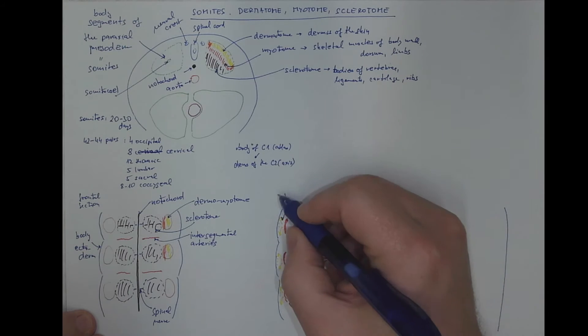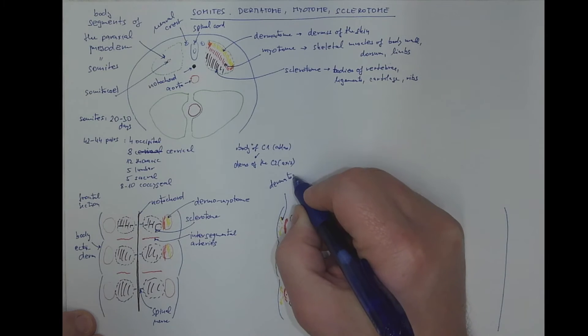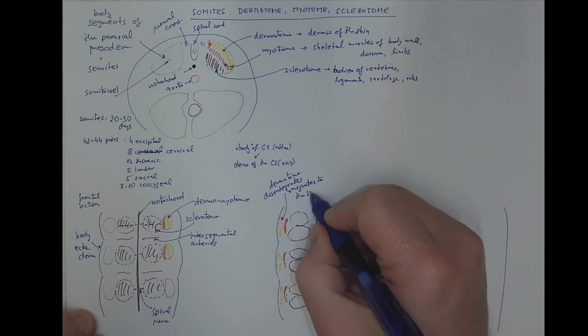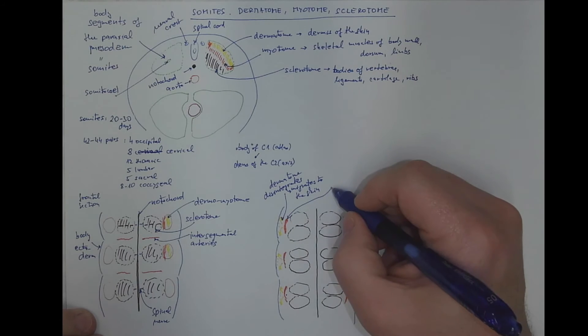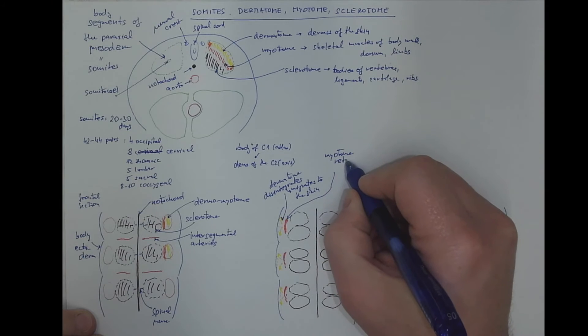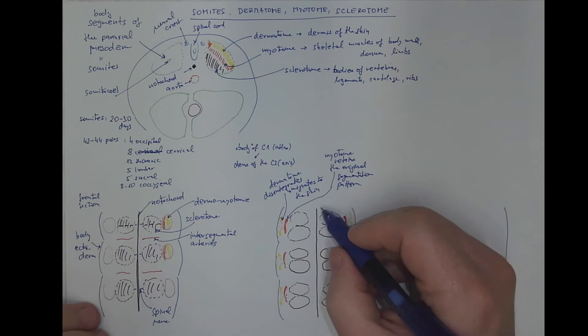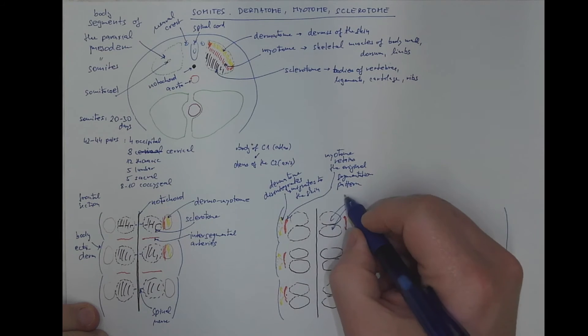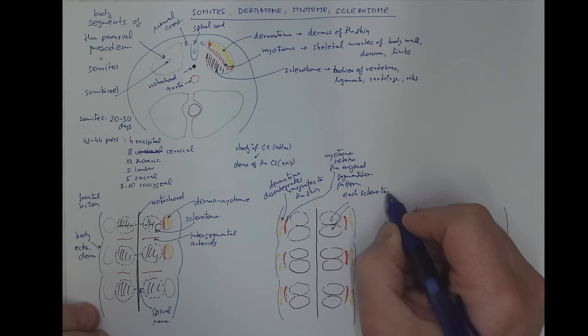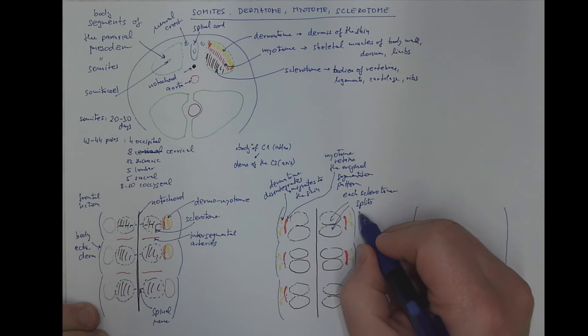So what happens here is that the dermatome disintegrates and migrates to the skin. The myotome retains the original segmentation pattern, while each sclerotome splits into upper half and lower half.